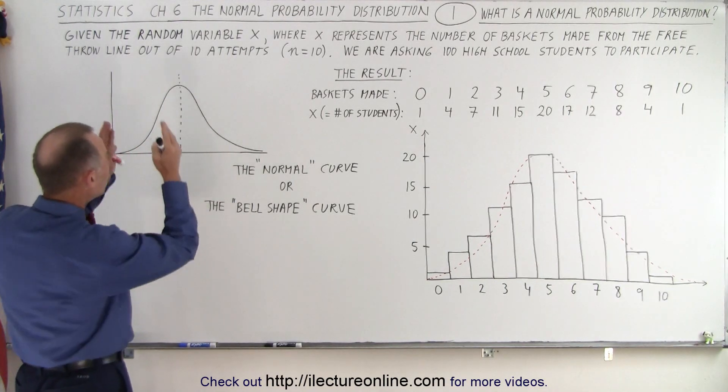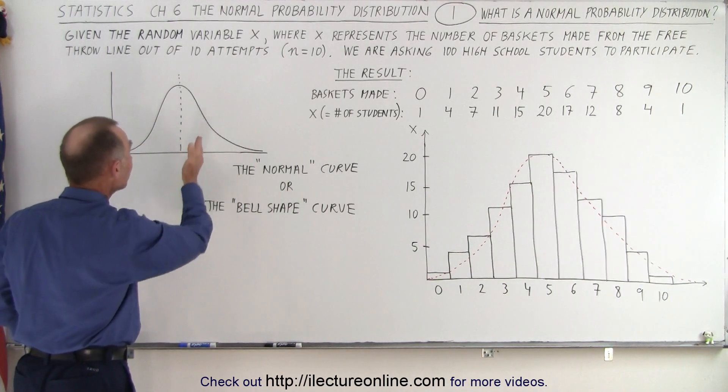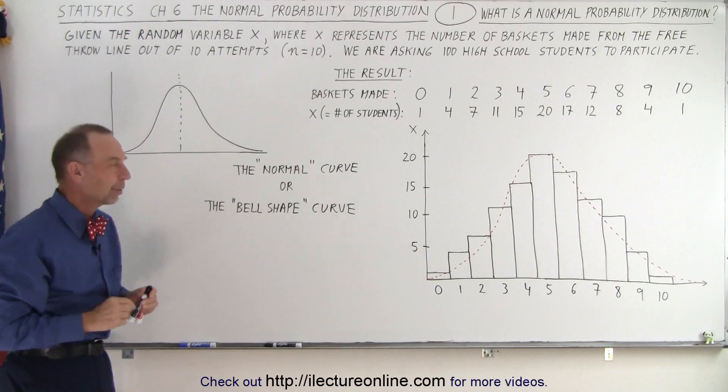So that feature alone makes it the Normal Probability Distribution. So the fact that both sides of the curve look the same, that makes it a Normal Probability Distribution.